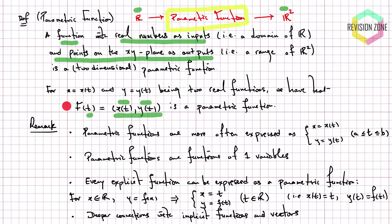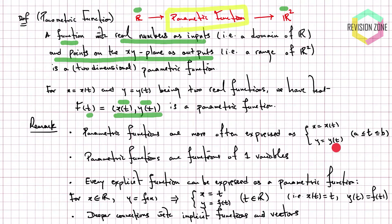This might look complicated, but once we do examples you'll see it's straightforward. Parametric functions are more often expressed in the convention used on the A-level syllabus: rather than writing one function with x and y as a coordinate pair, we write x = x(t) and y = y(t), specifying what values of t are allowed as inputs. This is the standard form you'll encounter.